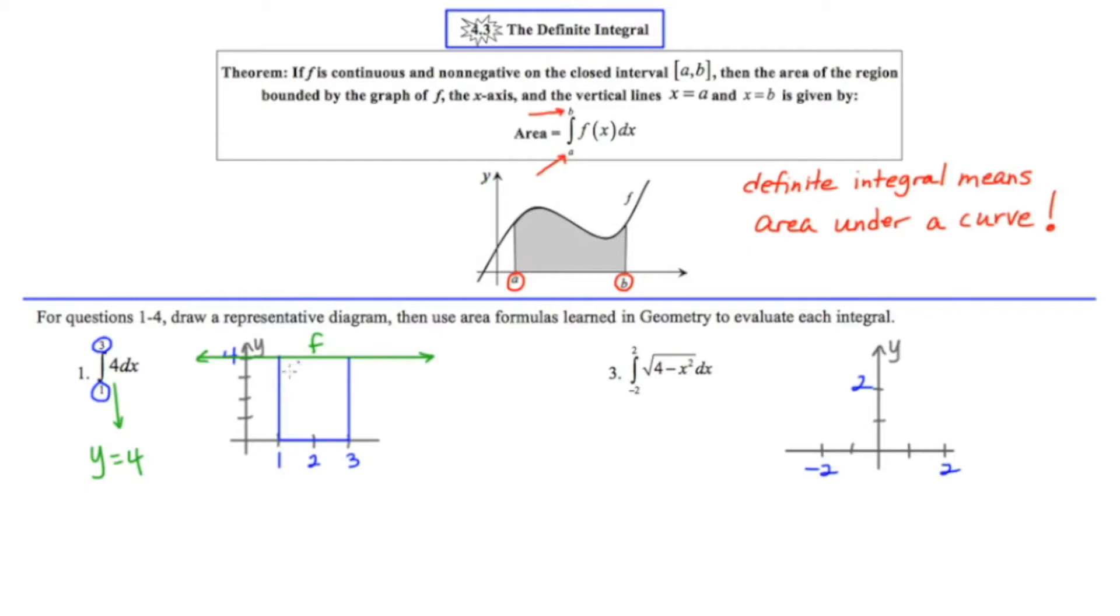So what I'm really doing is seeking out this area right here. And it just so happens that this area is a rectangle. So let's write down that it's a rectangle. The area formula for a rectangle is base times height.